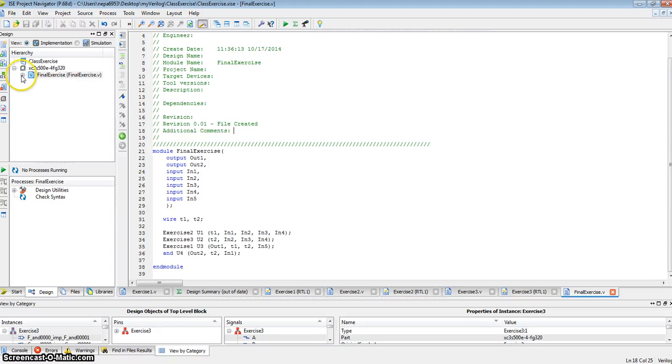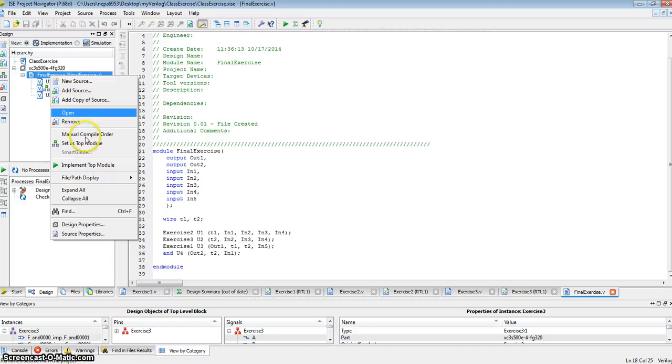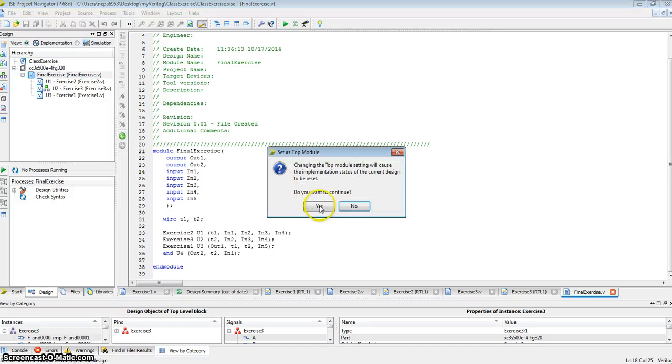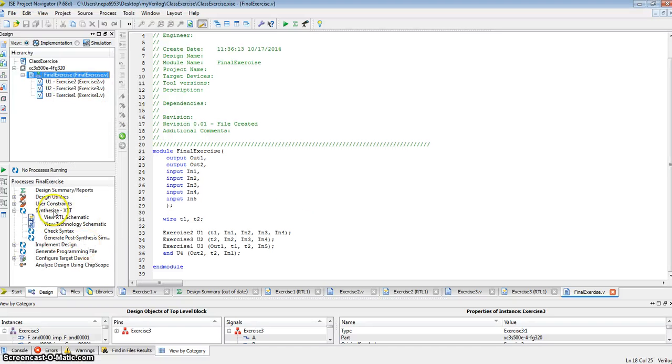As soon as it's saved, you notice how final exercise became the top module, and it inherited all the other modules that we had created. So let's set the final exercise as a top module. And now let's synthesize it. Once it's done synthesizing, hopefully the green checkbox comes up. Green checkbox is up.